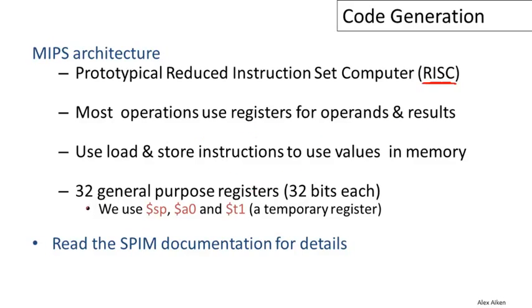There are 32 general purpose registers on the MIPS. It's a 32 bit machine. We're only going to use three of those registers: SP the stack pointer, A0 the accumulator, and we'll need one more register for temporary values. There's a lot more information on the MIPS architecture in the SPIM documentation. SPIM is the simulator that we will use to execute MIPS code.